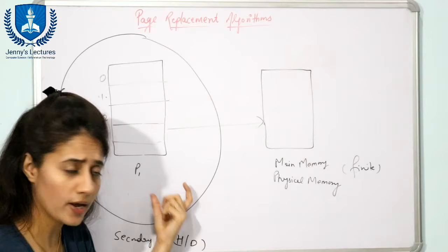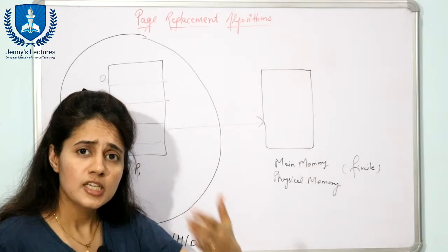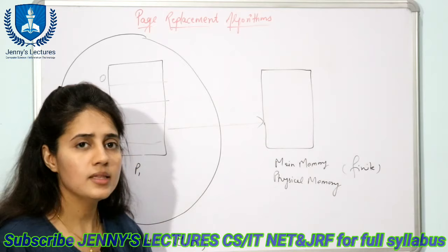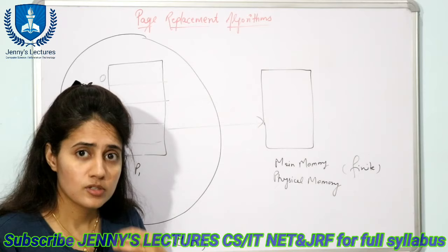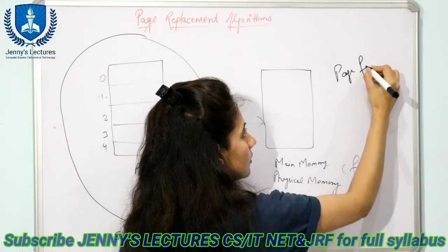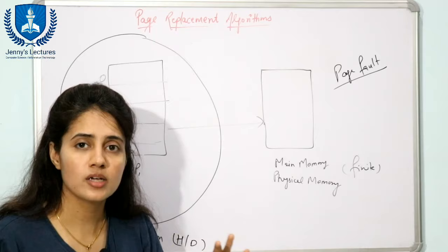Now, if at some point the CPU needs page number 2 of process P1, and that requested page is available in main memory, then normal execution proceeds. But if page number 2 is not present in main memory, then that situation is known as a page fault. If the needed page is not available in main memory, that is called a page fault.